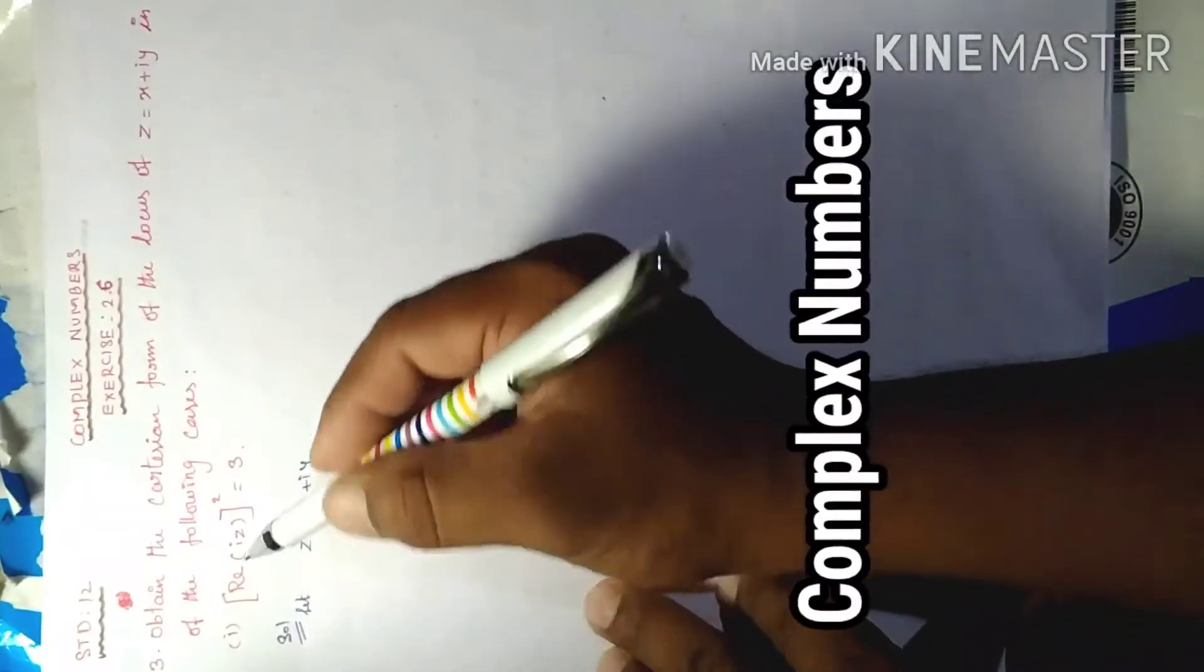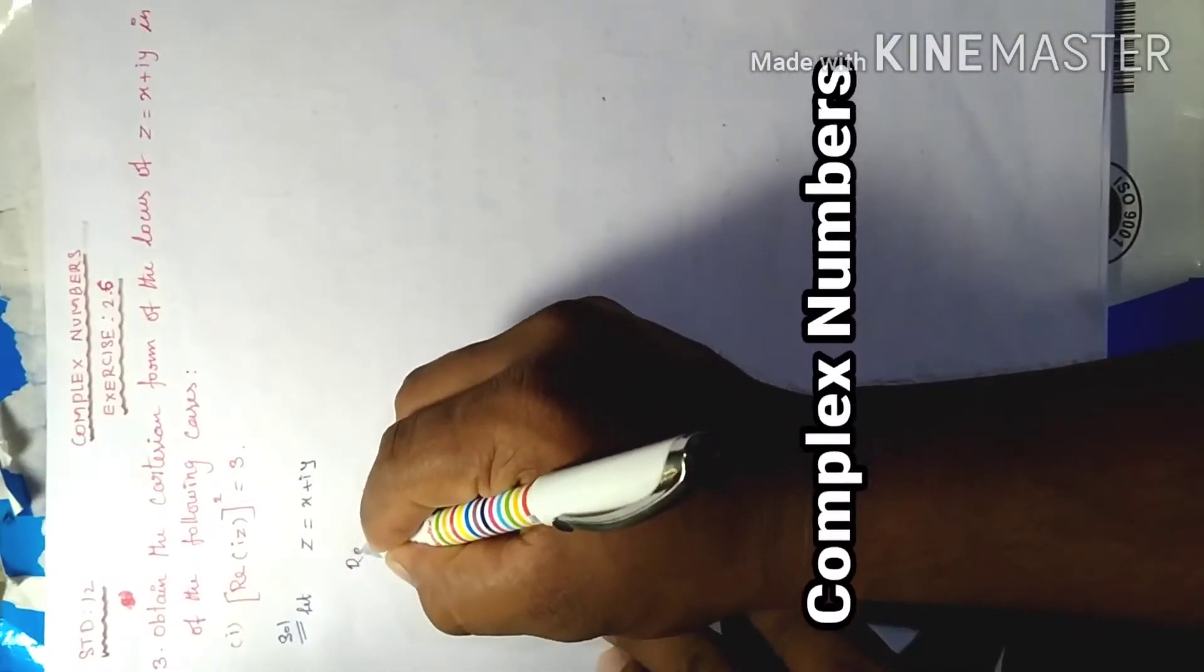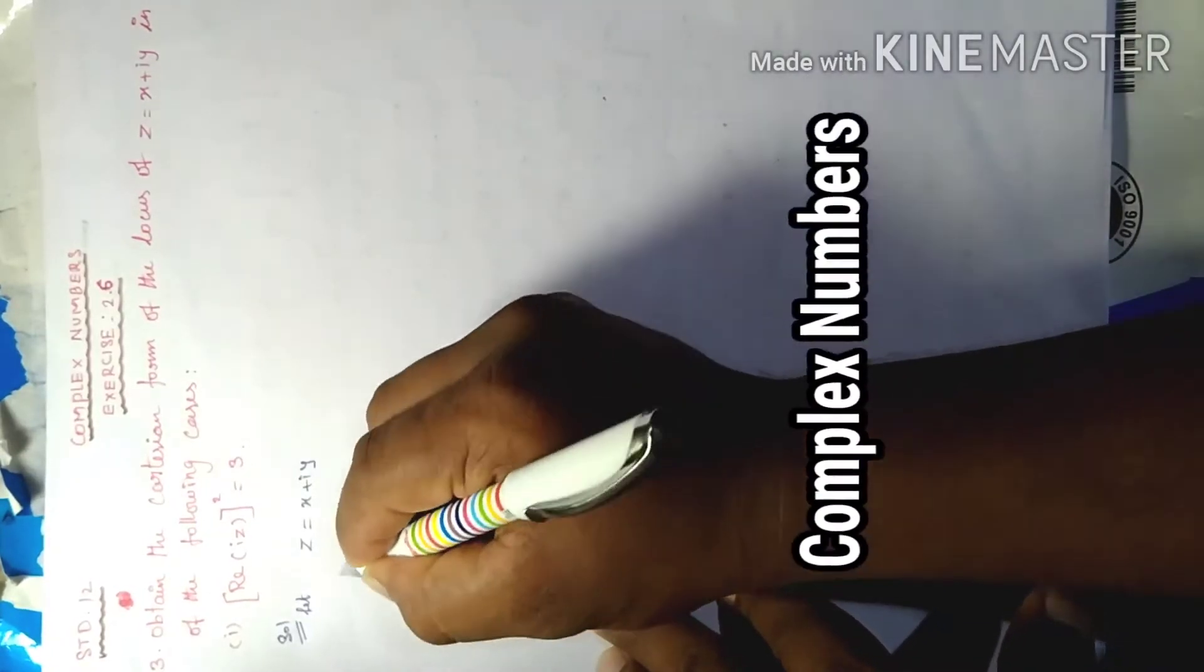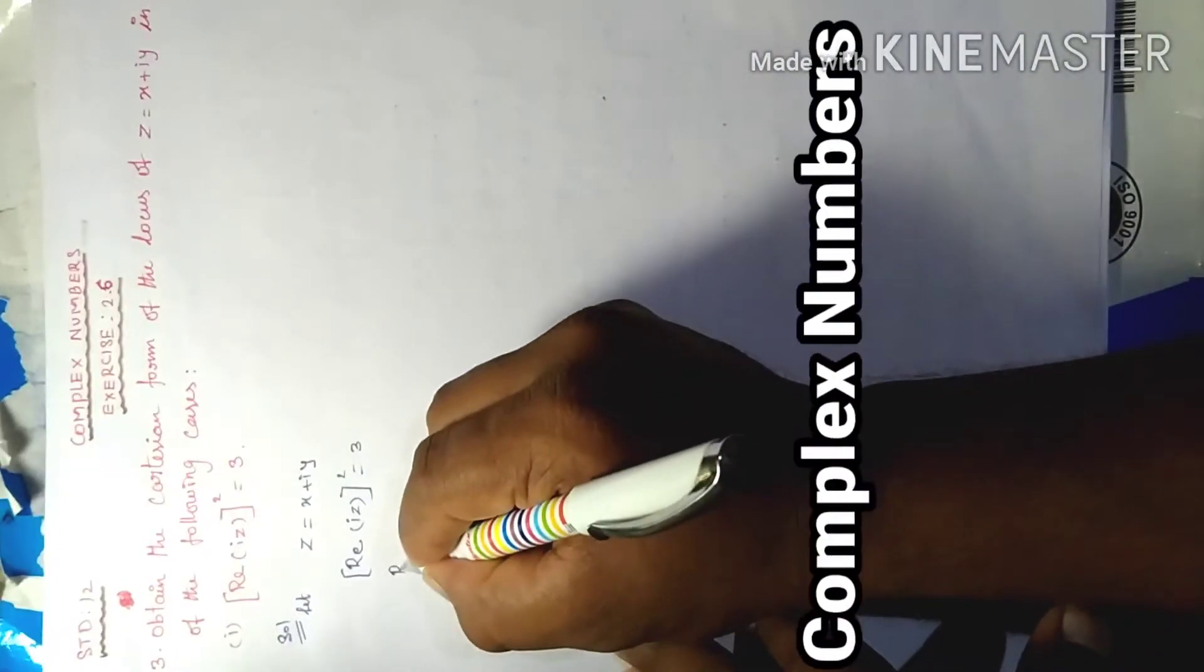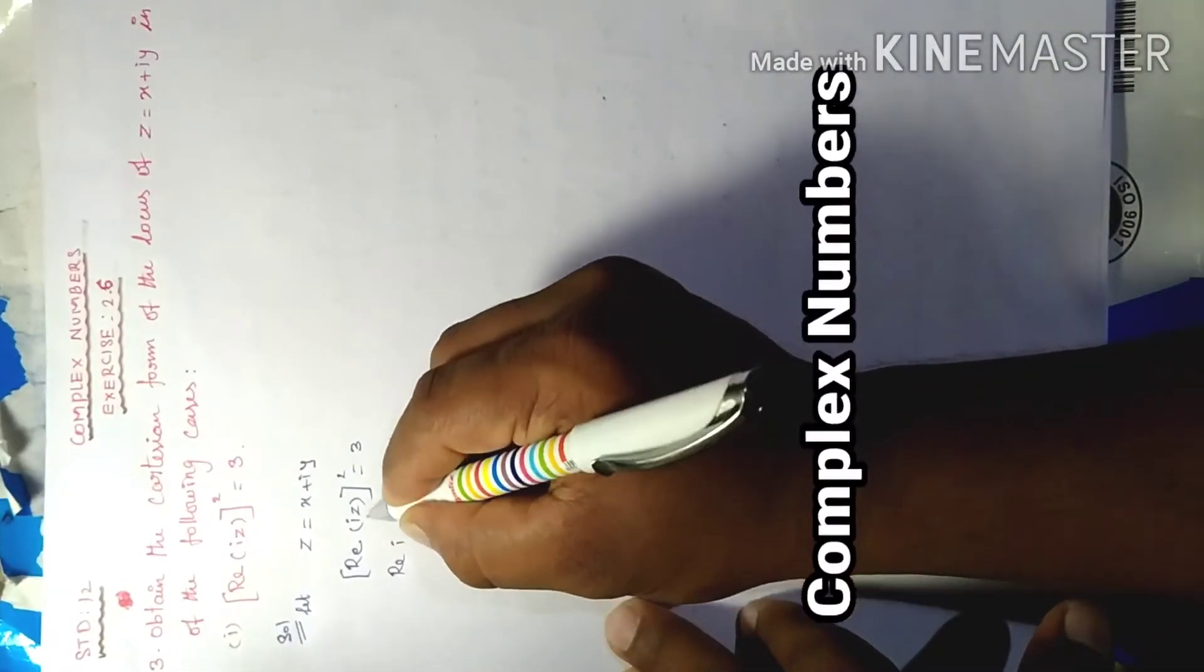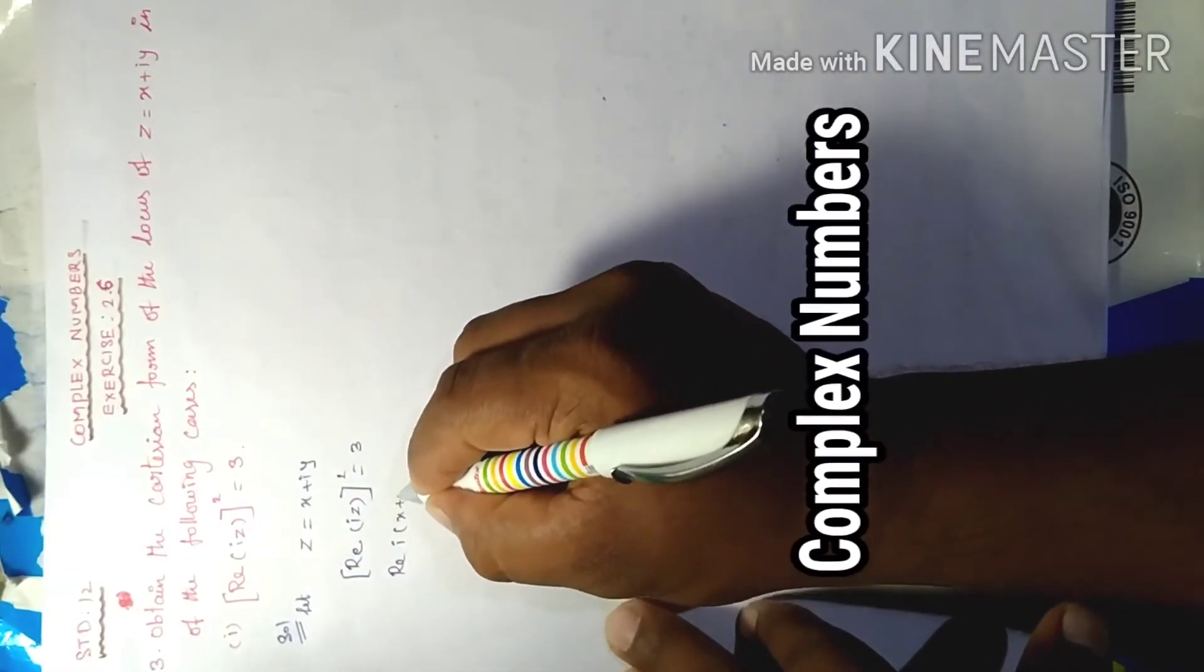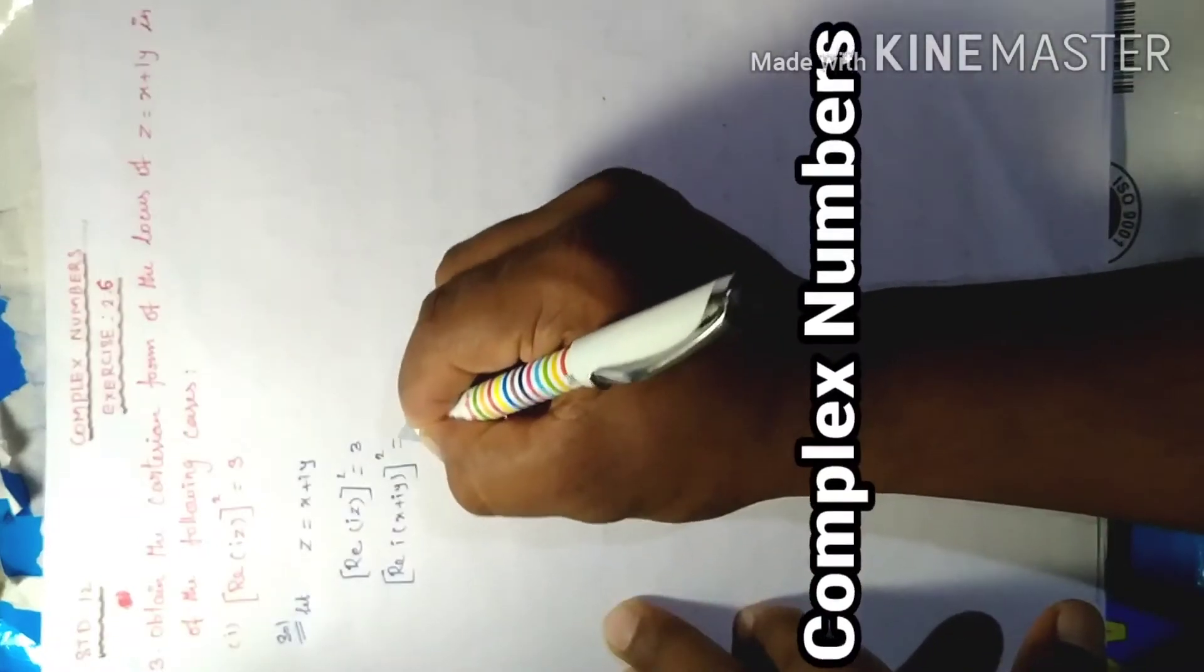That Cartesian equation is real part of iz whole square equal to 3. Real part of i into z value, that is x plus iy, whole square equal to 3.